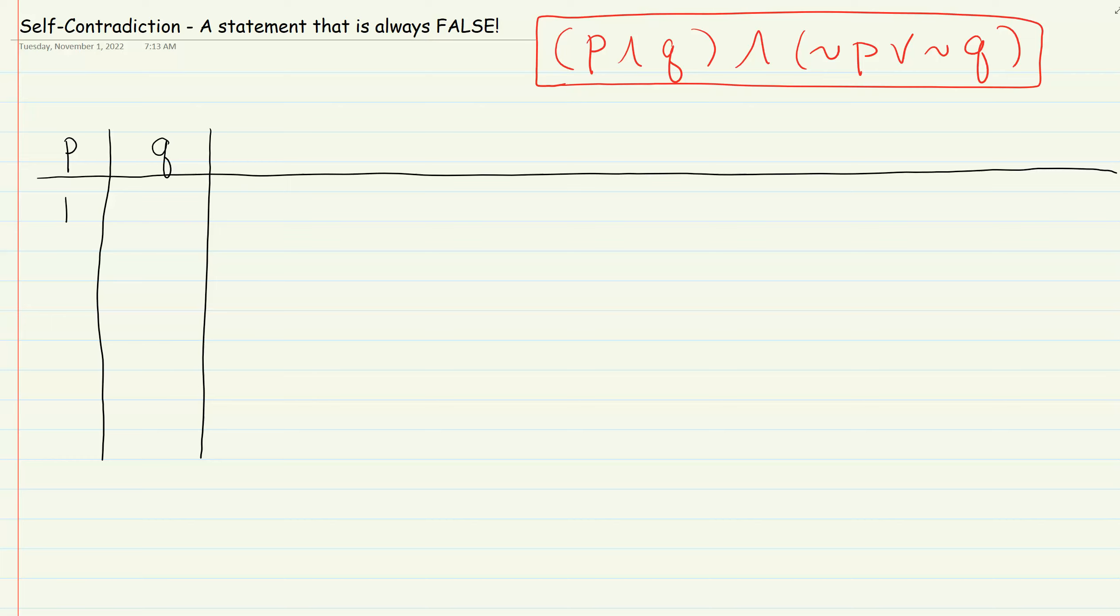So when building our truth table, those are the only possibilities that we have.